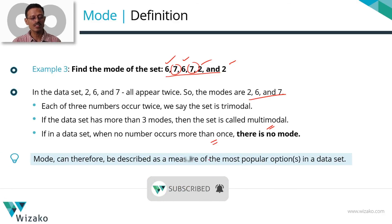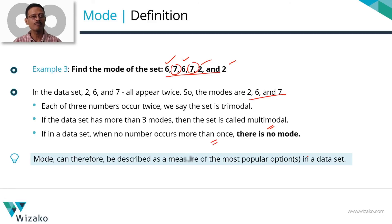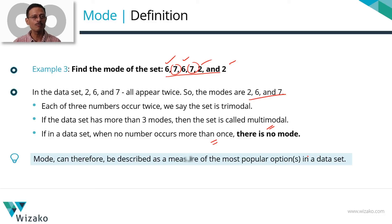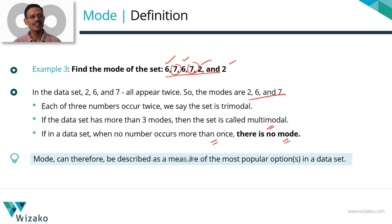Quick recap: Range is the difference between the largest and smallest number — it measures the extent of dispersion of observations in a data set. Median measures central tendency: for odd number of observations, write in ascending order and pick the middle number; for even number of observations, write in ascending order, pick the middle two numbers, and find their arithmetic mean. Mode measures the most popular element in a set of data. If one number has the highest frequency, that is the mode; if multiple numbers share the maximum frequency, all are modes. A data set where all elements appear only once has no mode.